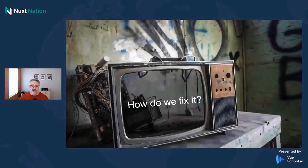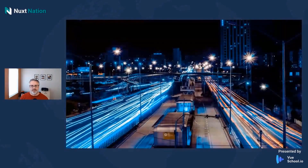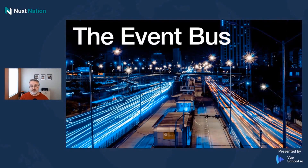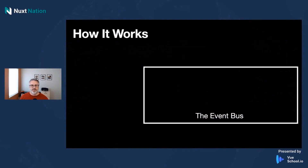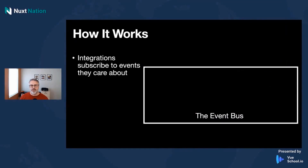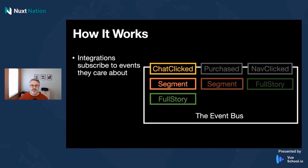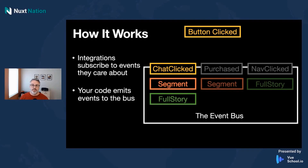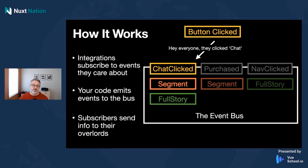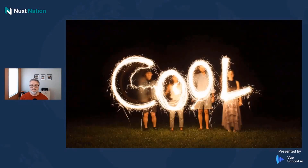How do you control all of it? By using the event bus — and of course, still using plugins. Here's how it works: integrations subscribe to the events they care about. For example, Segment cares about chat clicked and purchased; FullStory cares about purchased and nav clicked. Your code will emit events to the bus and won't talk to any of these directly. So when you click a button, it says someone clicked chat, and then subscribers send the info to their servers — Segment got it, FullStory got it.